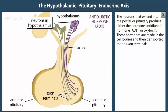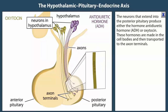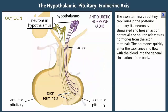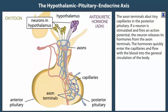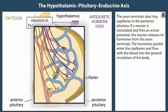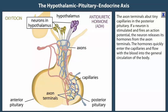These hormones are made in the cell bodies and then transported to the axon terminals. The axon terminals abut tiny capillaries in the posterior pituitary. If a neuron is stimulated and fires an action potential, the neuron releases its hormones from the axon terminals, which quickly enter the capillaries and flow with the blood into the general circulation of the body.